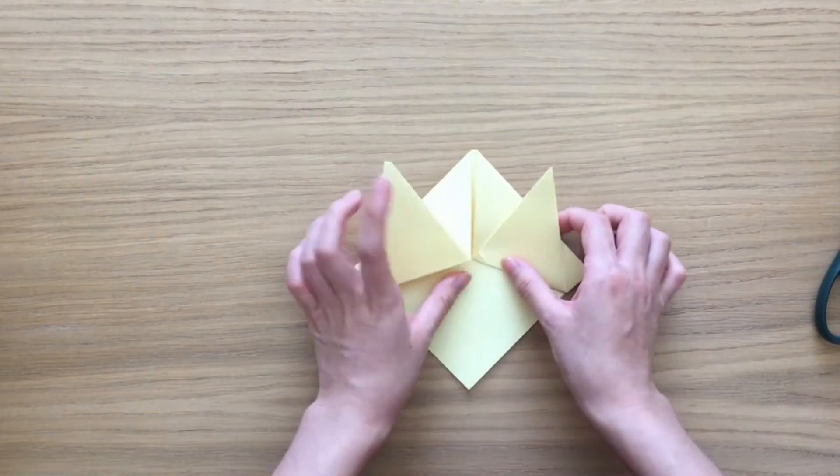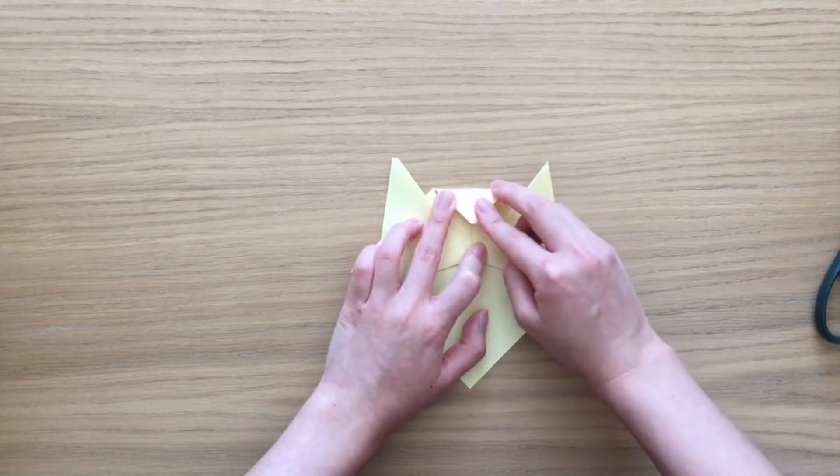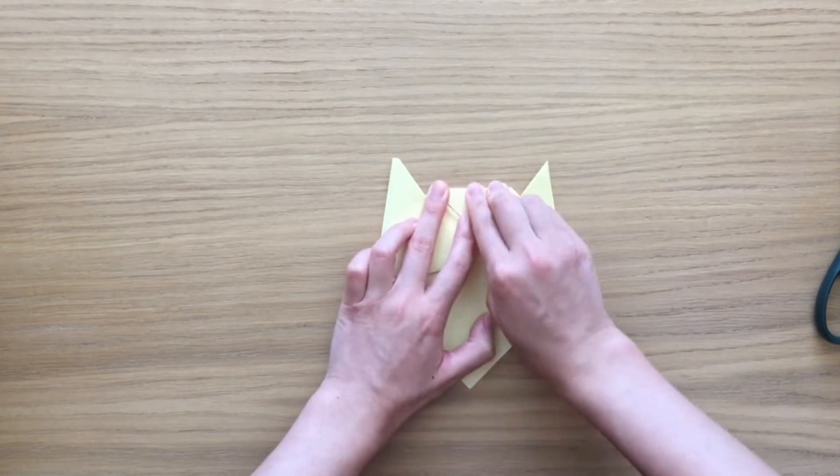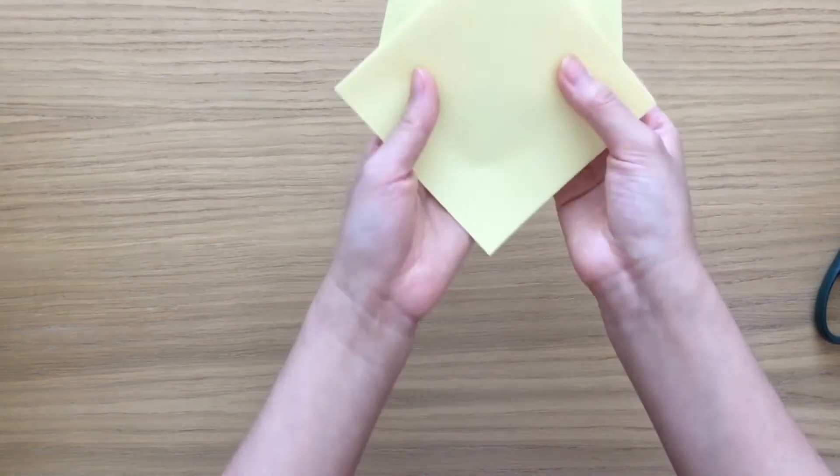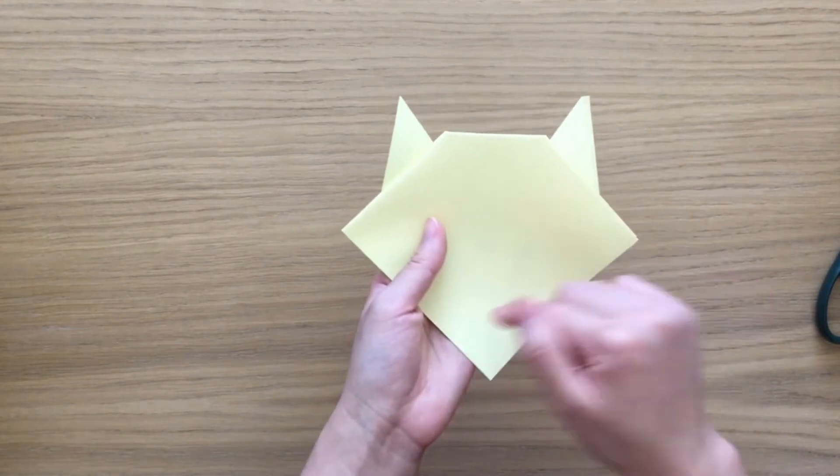Flip it back and just fold the top bit down to make the top of the head. Flip the cat over again and you can already see the little face starting to form.